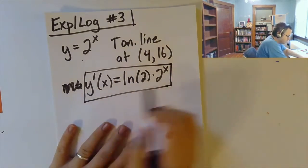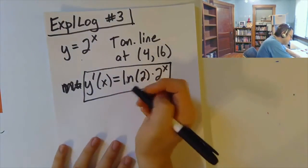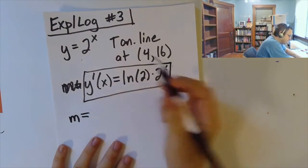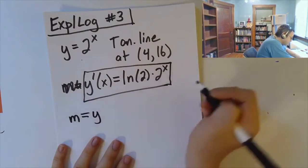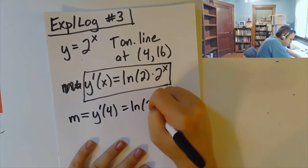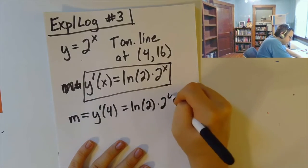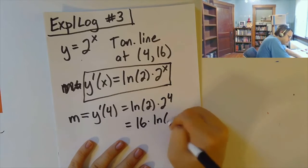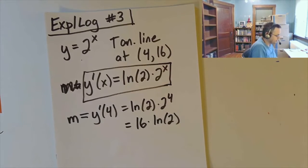But once we have this formula, then we can do this. Okay, so then that means that my slope here is y prime of 4, which is the natural log of 2 times 2 to the 4th, which I'll go ahead and write that as 16 times the natural log of 2. That's going to be my slope.